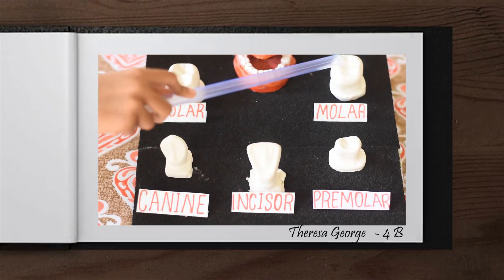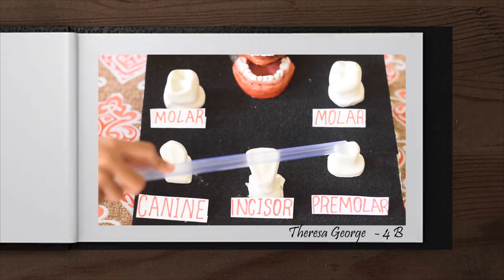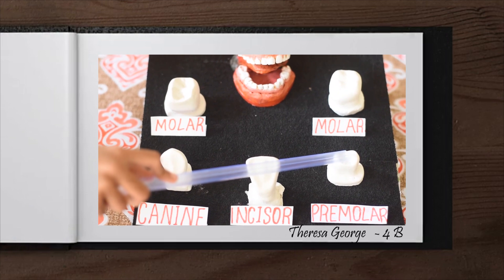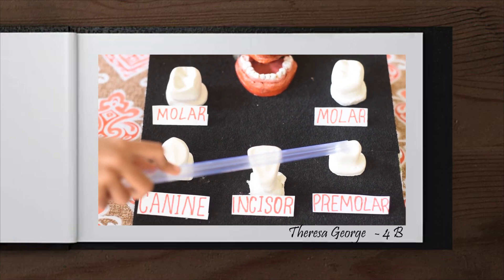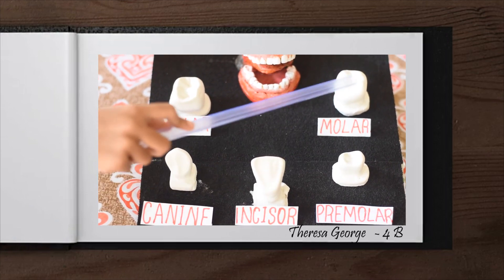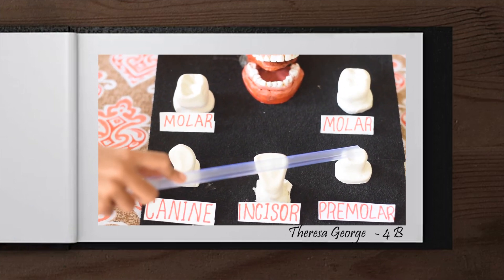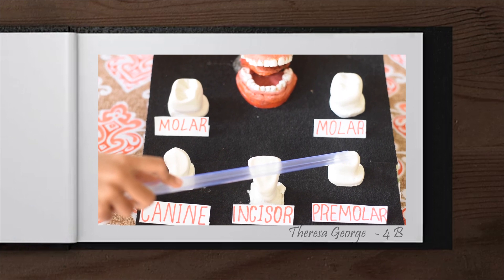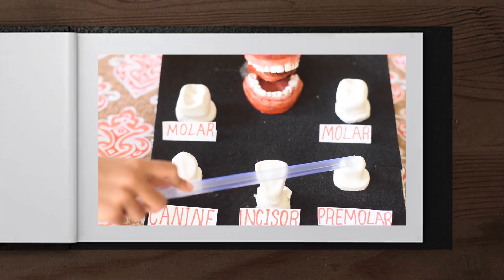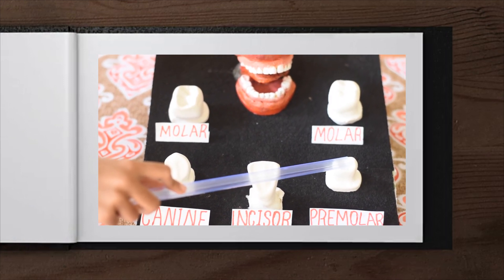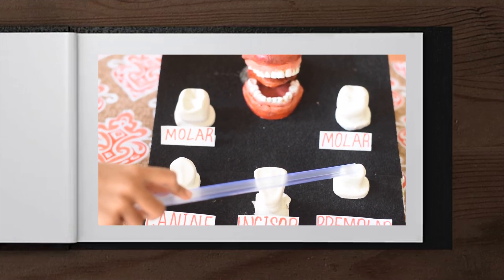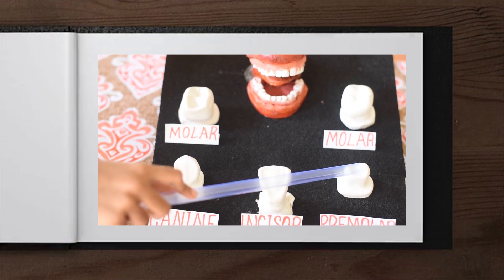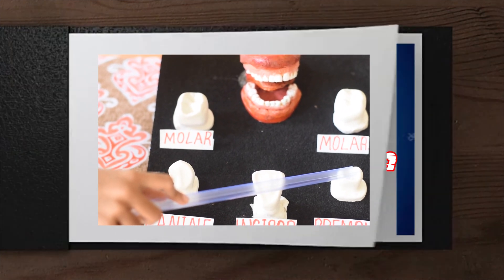Premolars and molars: premolars are located next to the canines and molars are next to the premolars. They are flat and broad at the top and are used to crush and grind food.